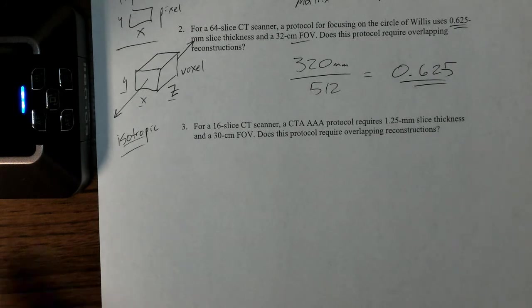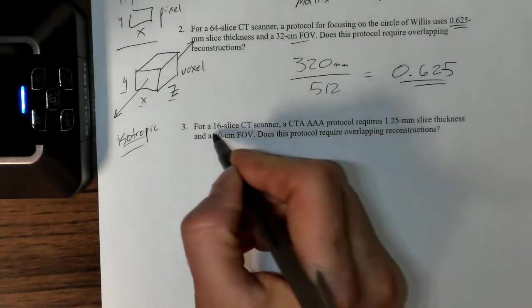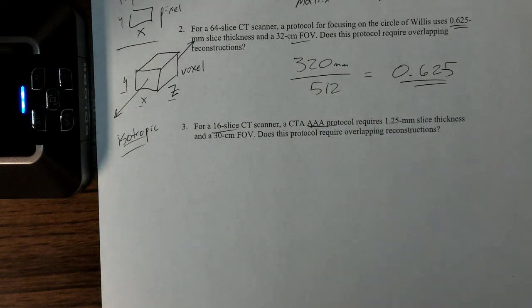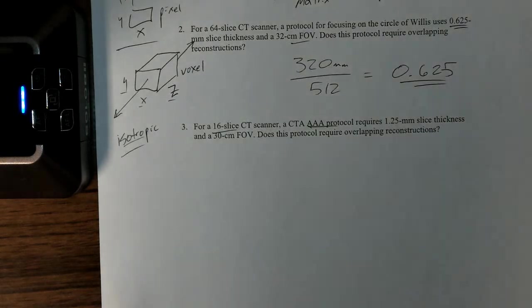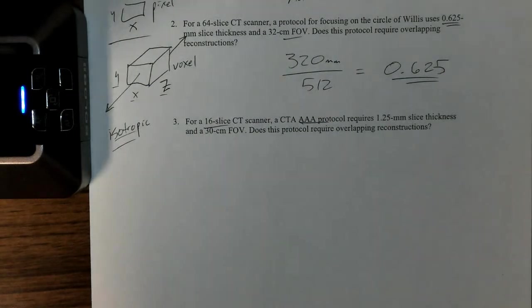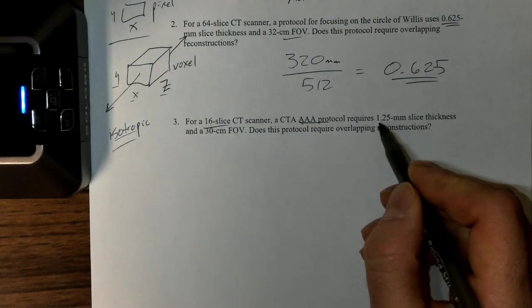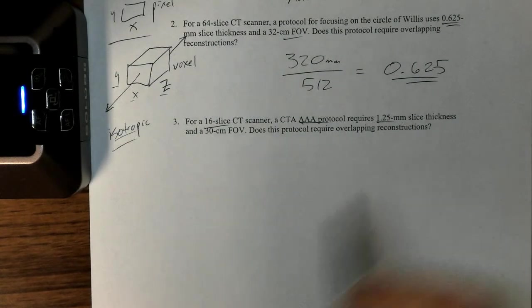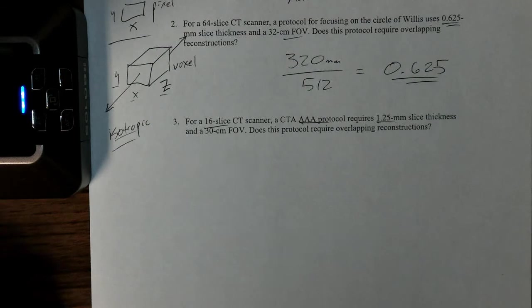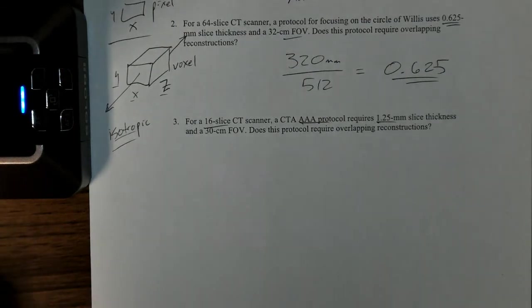Let's look at one last problem and put on our critical thinking caps. Looks like an older CT scanner, 16-slice CT scanner, and we're trying to do a triple-A protocol. Anytime I see anything that's angiogram-type stuff, we know that we have a narrow window in which we're going to be able to get the contrast in the patient and be able to see what we want to see. This requires 1.25-millimeter slice thickness and a 30-centimeter field of view. Does this protocol require overlapping reconstructions?